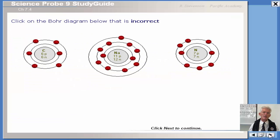Click on the Bohr diagram below that is incorrect. A Bohr diagram shows the symbol, number of protons, number of neutrons. Can you remember how to find the number of neutrons? Number of neutrons would be the mass number. Get off the periodic table, round it to the nearest whole number, subtract the atomic number, which is the number of protons, and you will get the number of neutrons.